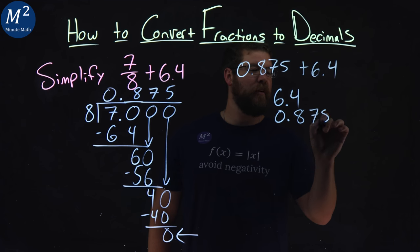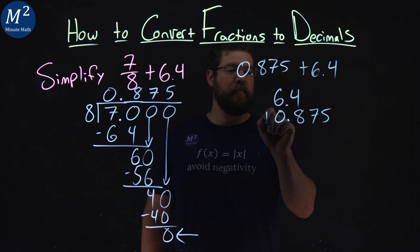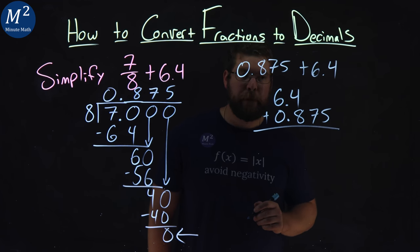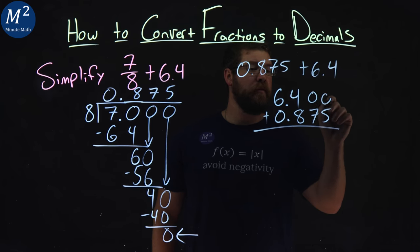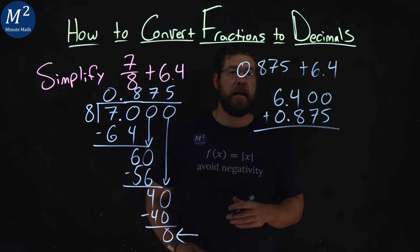0.875, we make sure the decimals line up. We're going to add them. Notice 6.4 has nothing afterwards, but we can add zeros there. It's the same number. Now, let's go.